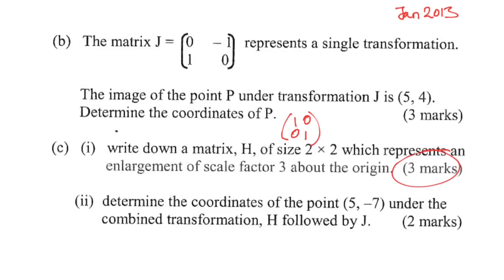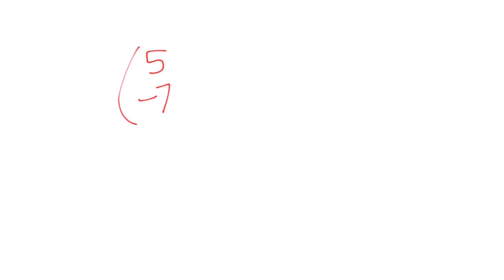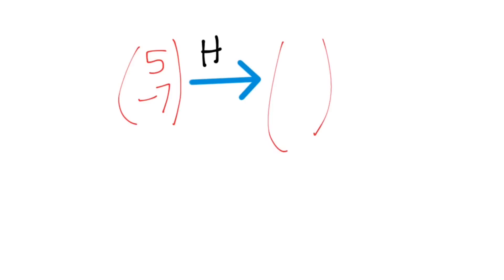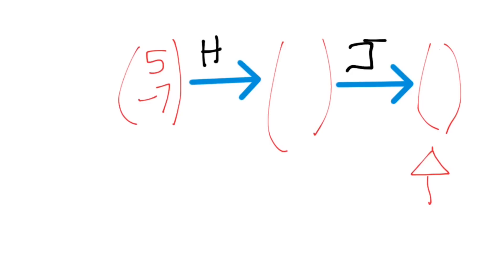Determine the coordinates of the point (5, −7) under the combined transformation H followed by G. We'll hit this point under H first, get our answer, then apply G to that result to get the final answer. It's like a composite transformation — similar to composite functions. It really is not hard, seriously.